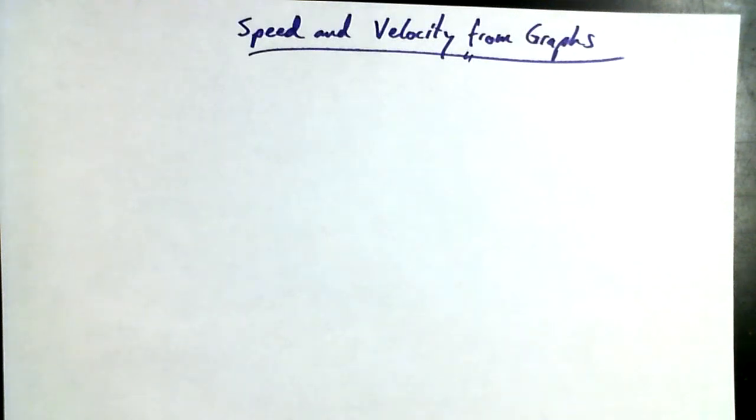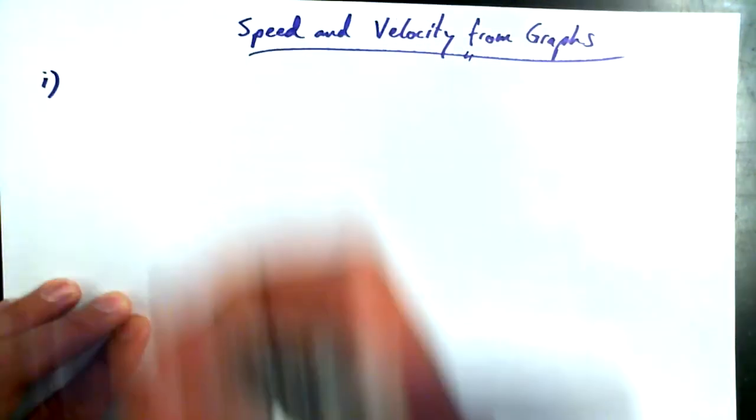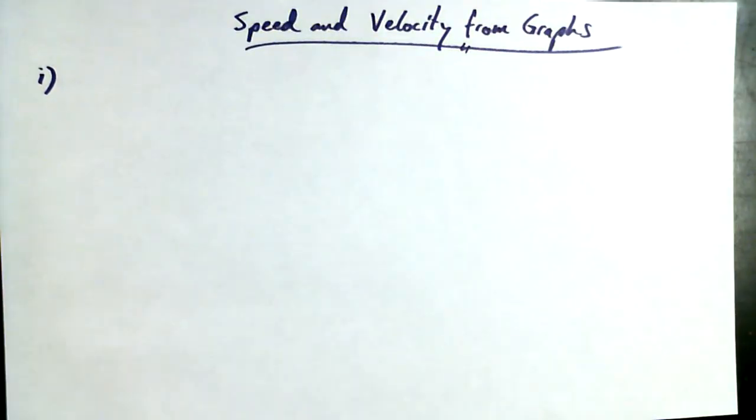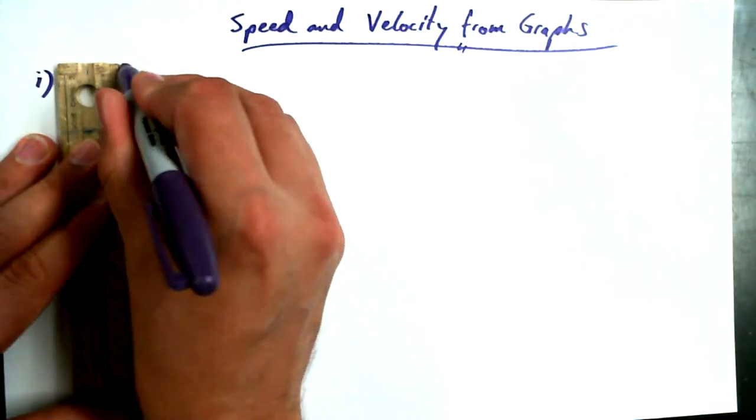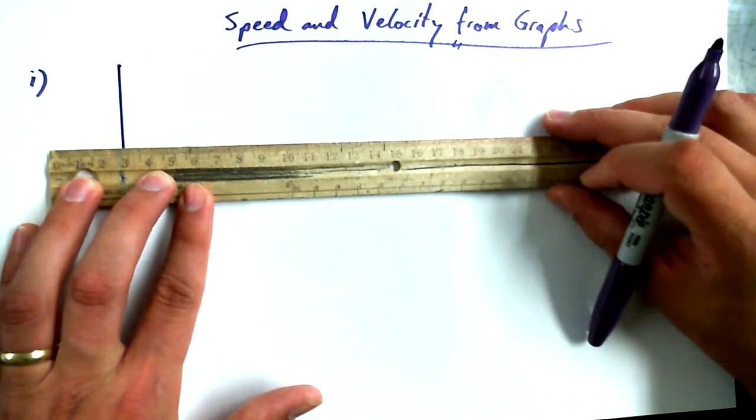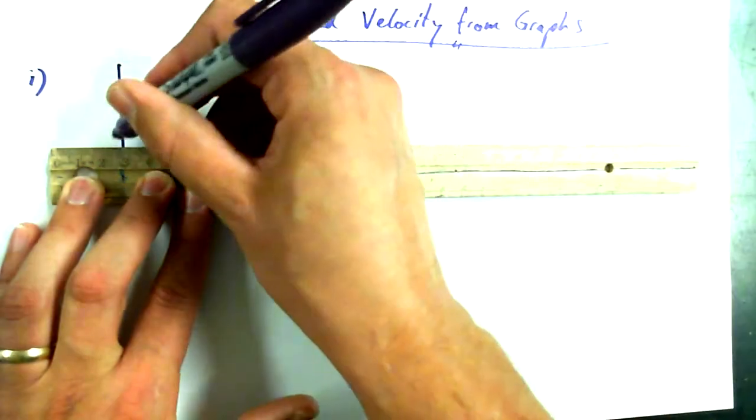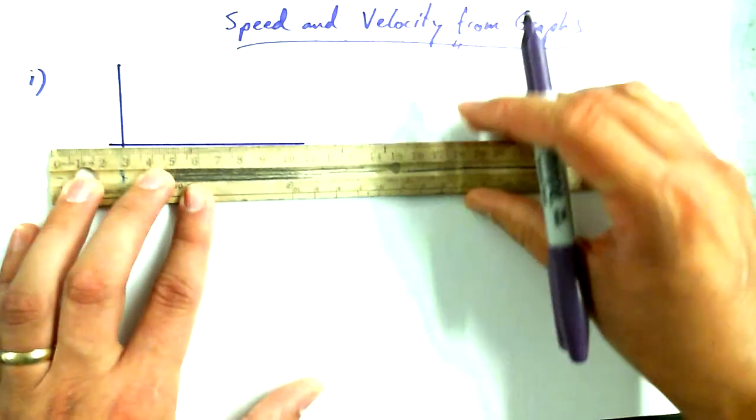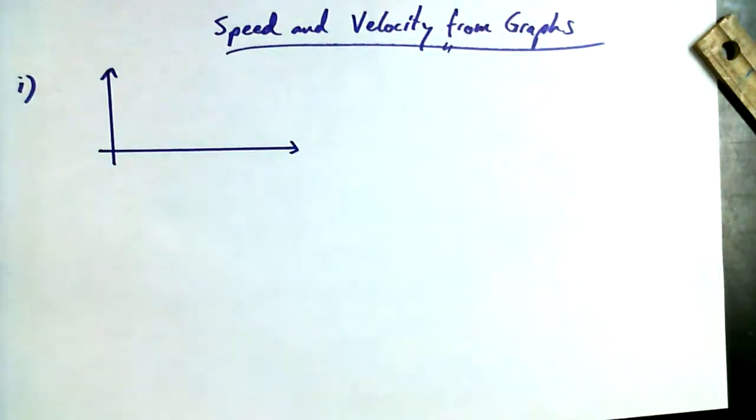All right, so we want to talk about speed and velocity from graphs. Graph i, I'm going to have some of the formal parts of a graph here, but it's obviously not going to be totally formal, so I want to keep it small.